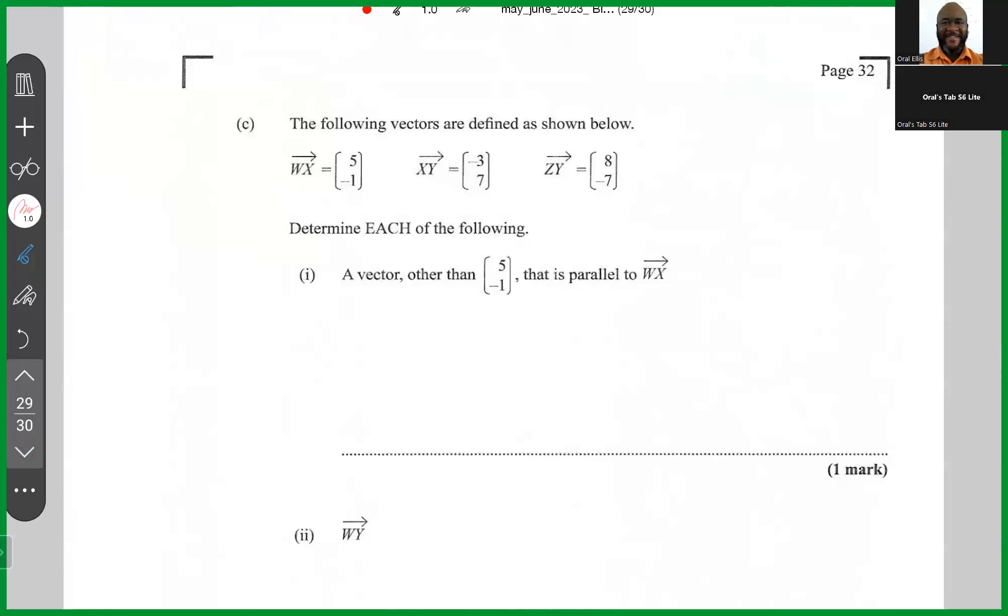Here's what we know about parallel vectors. When two vectors are parallel, they are scalar multiples of the same base vector. So some other arbitrary vector A, which could be like 2 times 5, minus 1, which is 10, minus 2, is parallel to 5, minus 1. Not just 2, any number that you multiply 5, minus 1 by is going to give you a vector that is parallel to it.